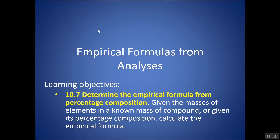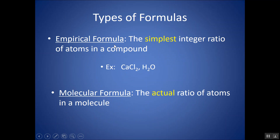In this video, we're going to look at how to determine the empirical formula. The empirical formula is the simplest integer ratio of atoms in a compound. If I'm looking at a formula like CaCl2, there's one Ca for every two Cls. I can't simplify these subscripts any further than a 1 to 2 ratio. Sometimes the empirical formula is the actual ratio of atoms, and sometimes it's not. We call the actual ratio of atoms in a molecule the molecular formula.